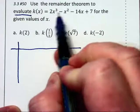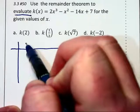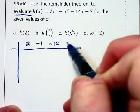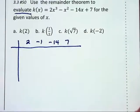The coefficients of our polynomial are 2, negative 1, negative 14, and 7. So I will write those up top.